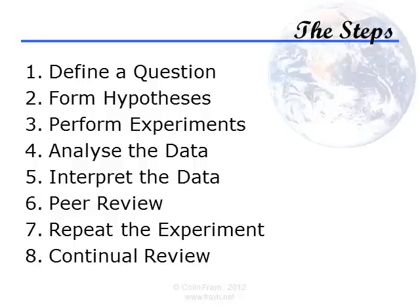Step 7: Repeat the experiment. The scientific process is continually improving and doesn't deal in solid, unquestionable dogmas. It's important that others can replicate any work we do in order to rule out fluke results. Step 8: Continual review. Not only should others replicate and verify our results, they should continue to do so as long as our theory stands — otherwise, previously well-supported theories might not stand up to increasingly accurate experimental methods as technology improves. If we just assume they're correct and never go back to test them, we might never know. And remember: extraordinary claims require extraordinary evidence.